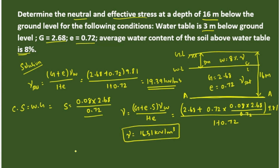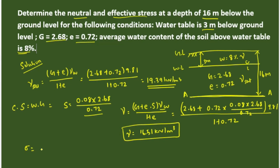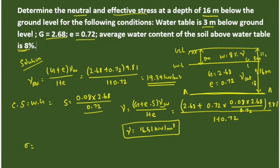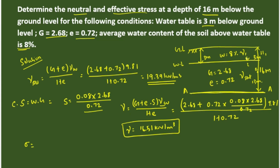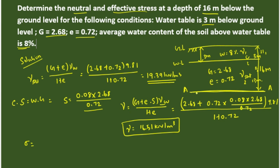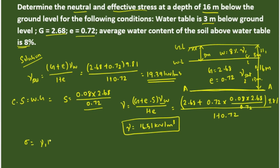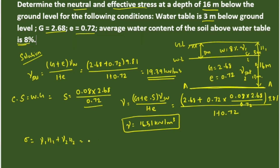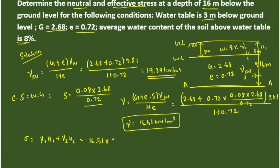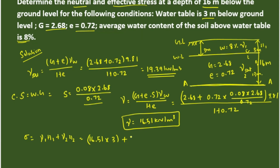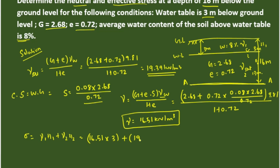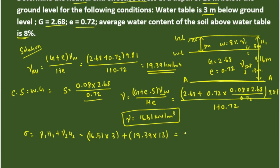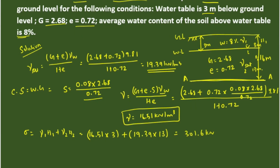Now we can find the total stress. We define H1 = 3 m (above water table) and H2 = 13 m (below water table), with corresponding unit weights gamma_1 = 16.51 kN/m³ and gamma_2 = 19.39 kN/m³. The total stress at 16 m depth is: sigma = gamma_1 × H1 + gamma_2 × H2 = 16.51 × 3 + 19.39 × 13, which gives a total stress of 301.6 kN/m².